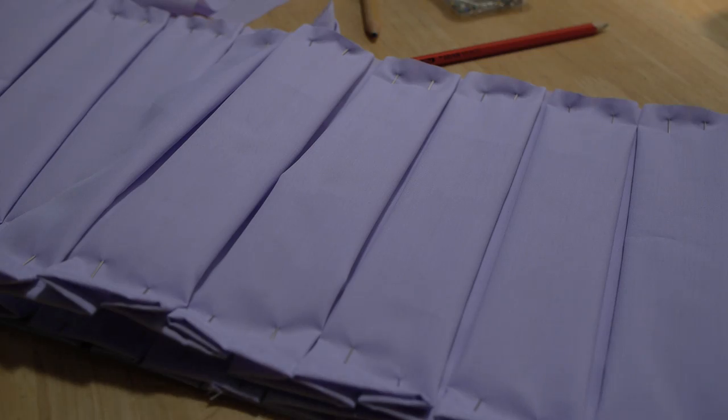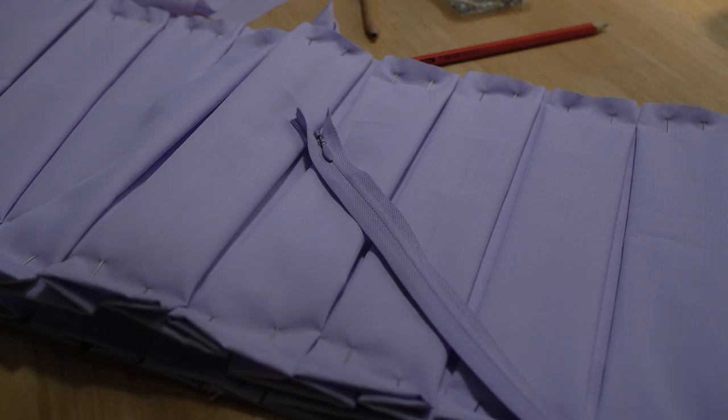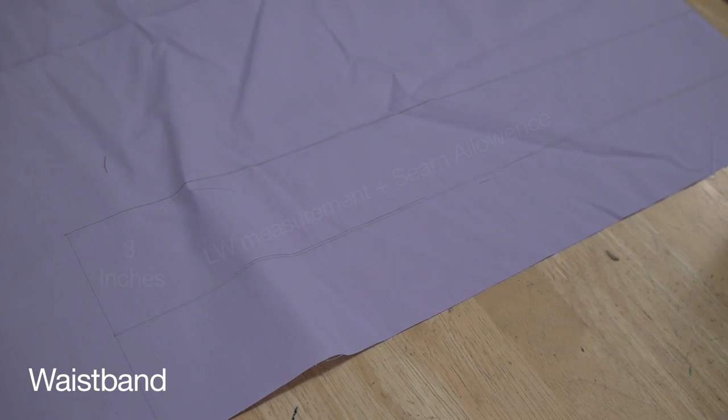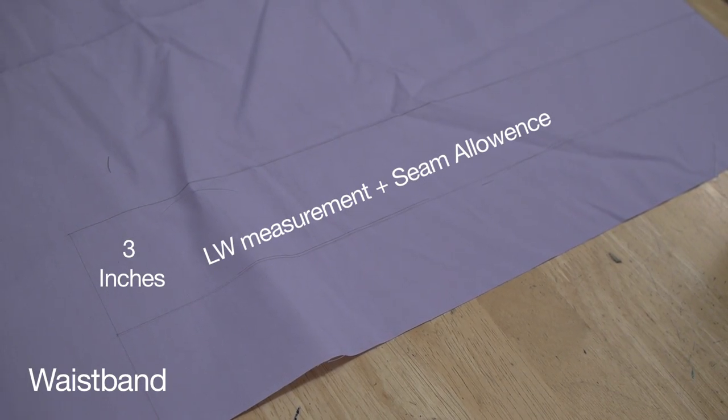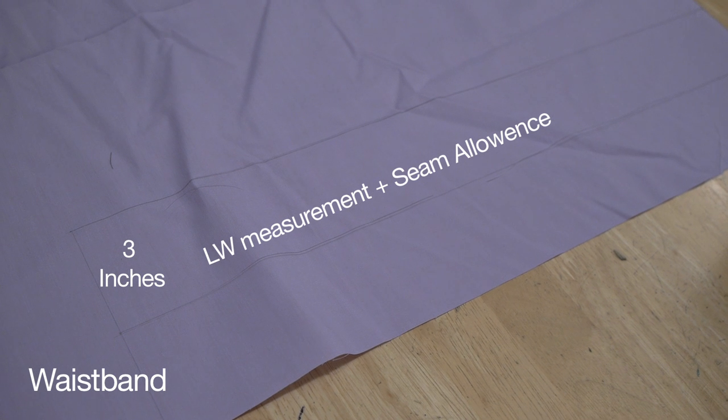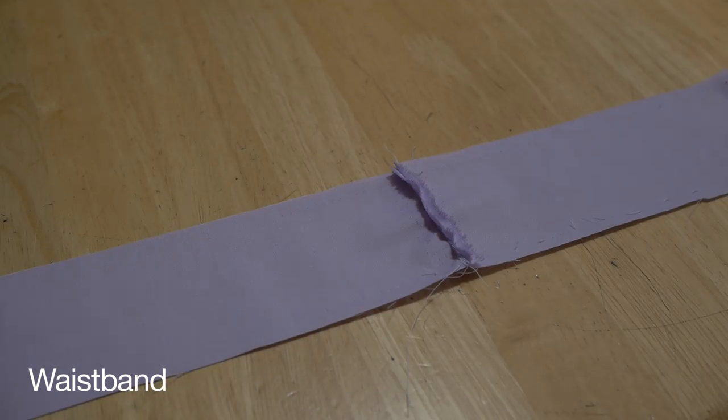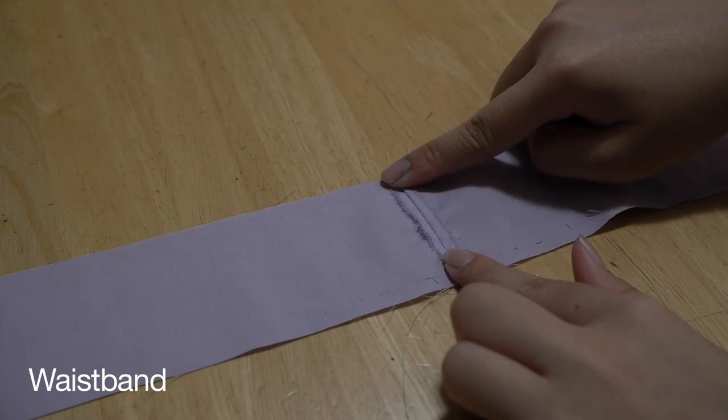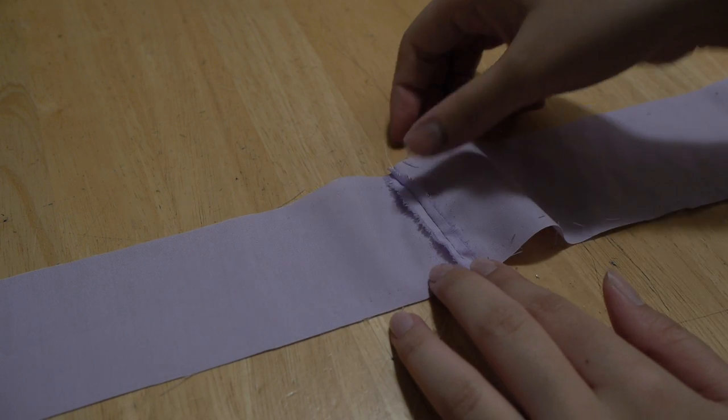Next, attach your zipper on either side of your skirt. Now, cut out your waistband. It can be one continuous piece or if you don't have enough fabric, you can cut two pieces out. If you cut two pieces out, open up the seam and press it with an iron.